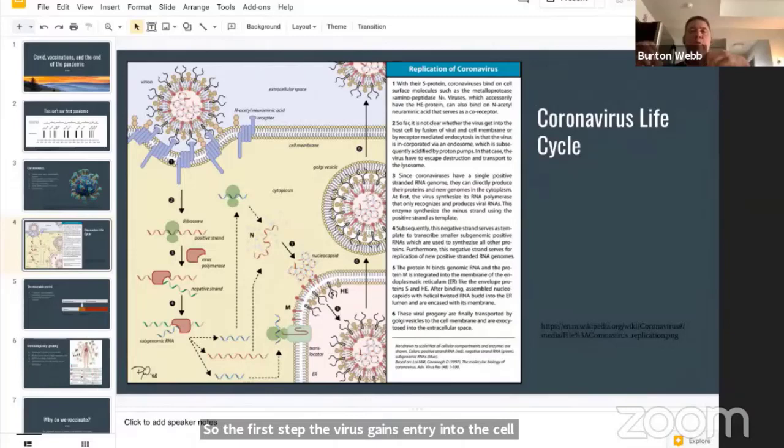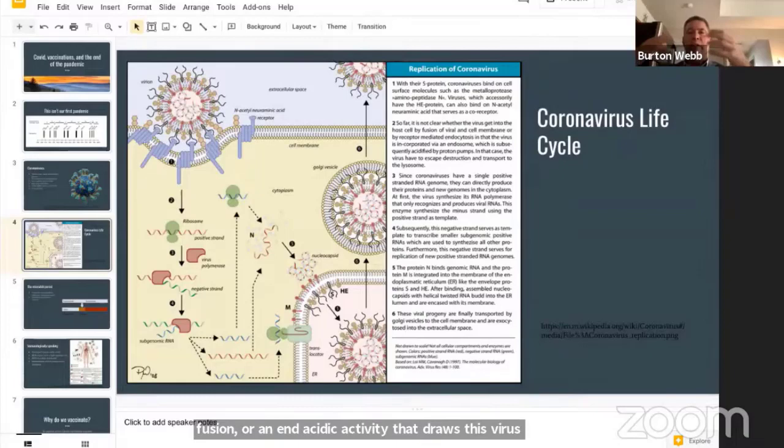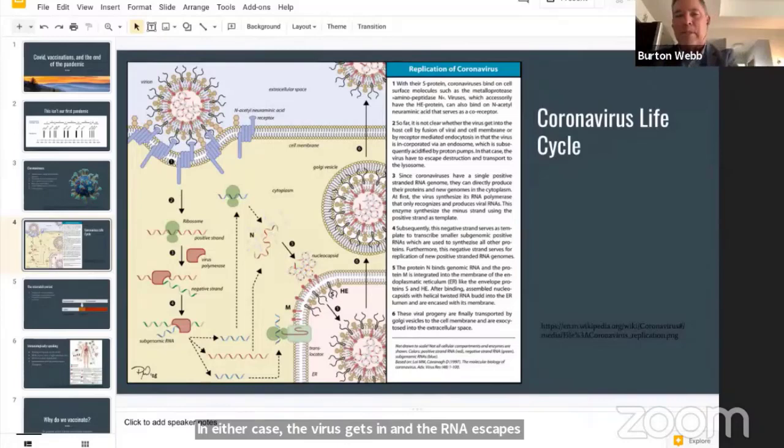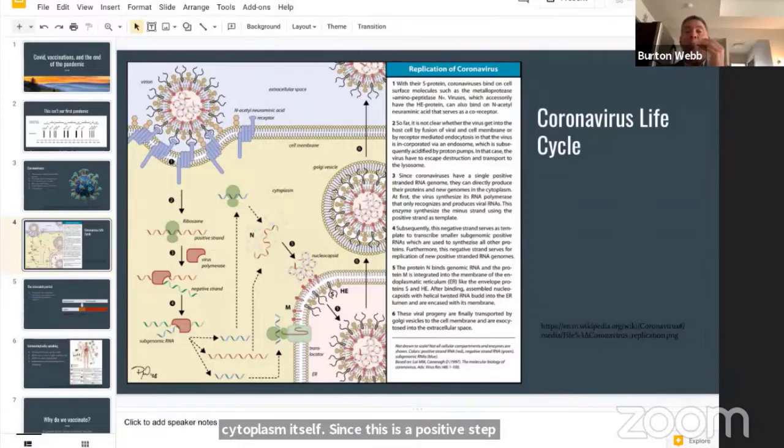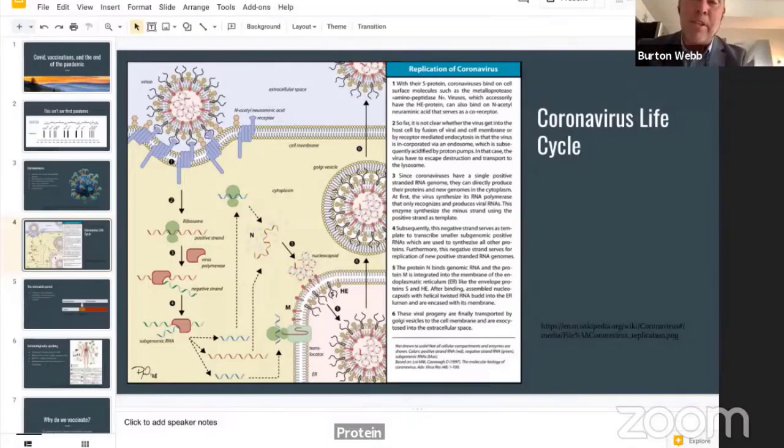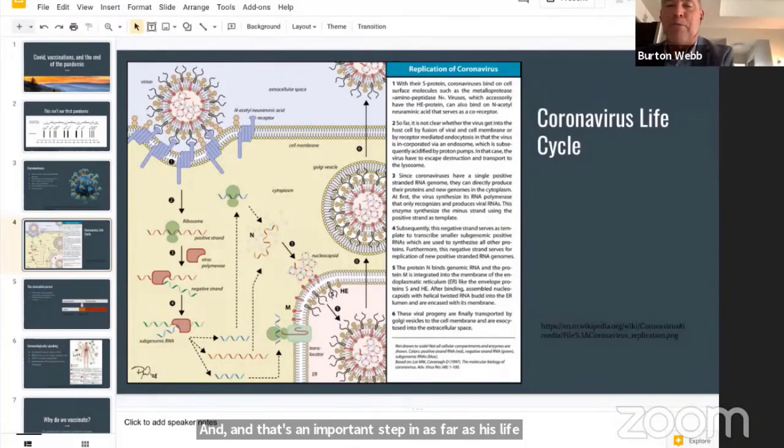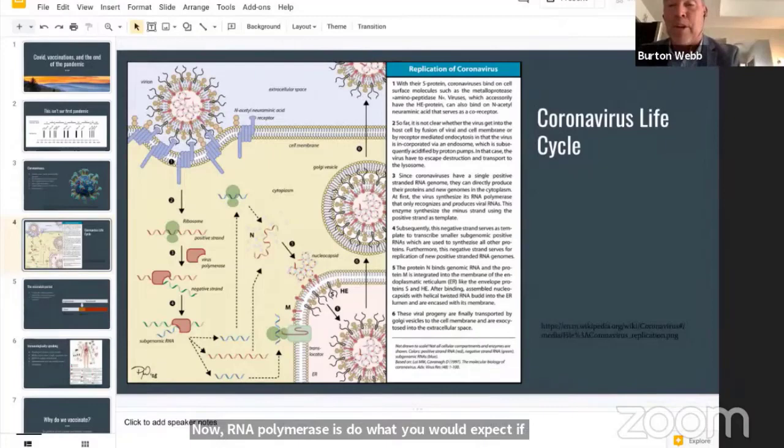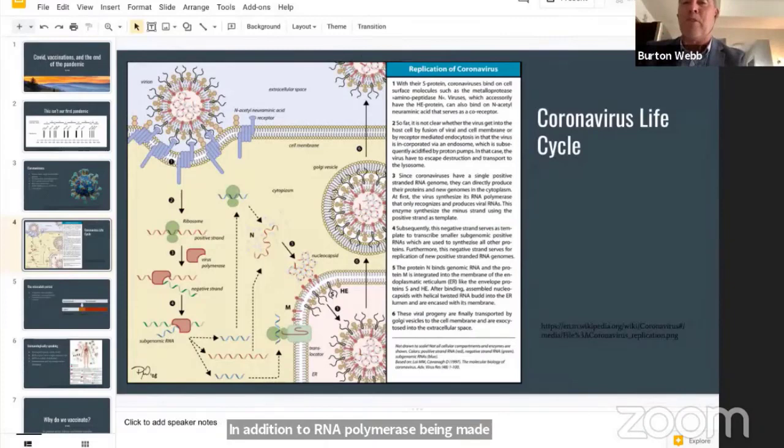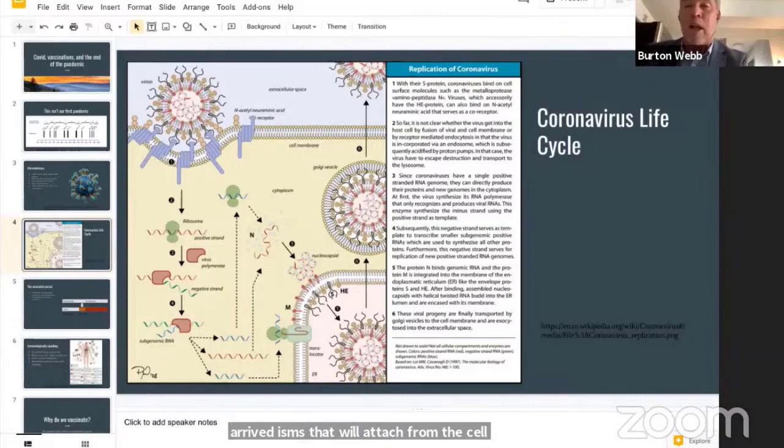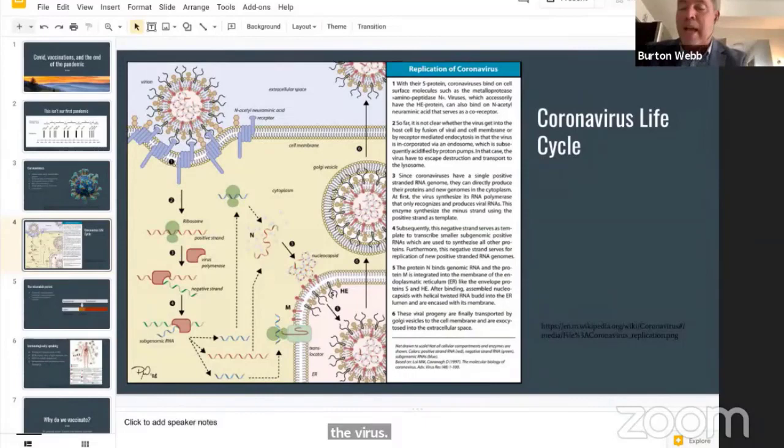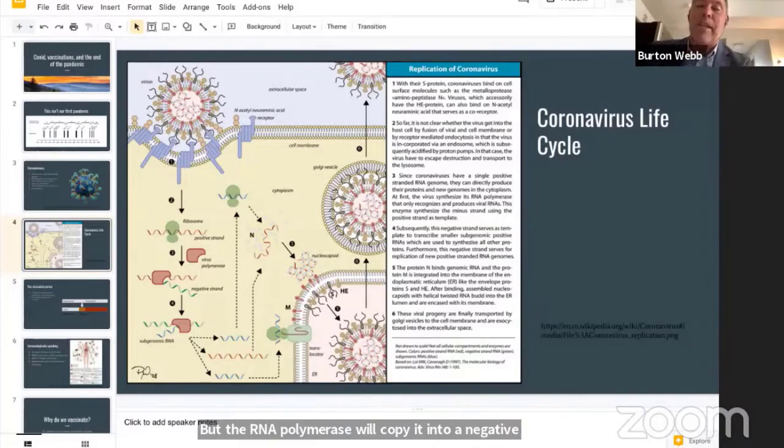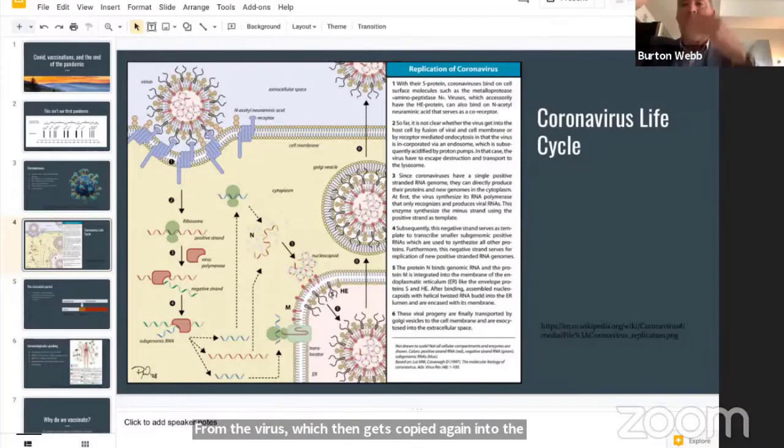Those spike proteins are attaching to something. In the case of COVID, that would be the spike protein on the surface of the virus and the ACE2 receptor on the surface of the cell. So the first step, the virus gains entry into the cell. The virus gets in and the RNA escapes and makes its way into the cytoplasm of the cell. Since this is a positive sense RNA virus, that RNA can be immediately transcribed into protein. One of the first proteins it must transcribe is a viral RNA polymerase.